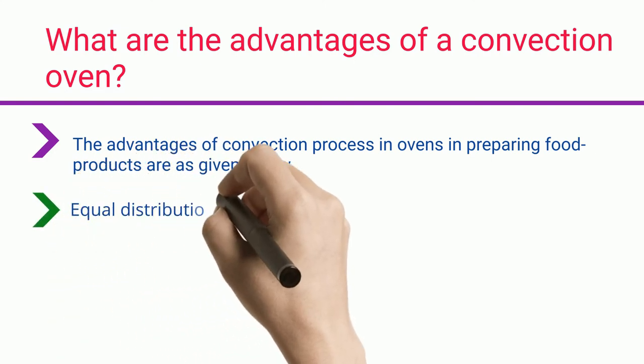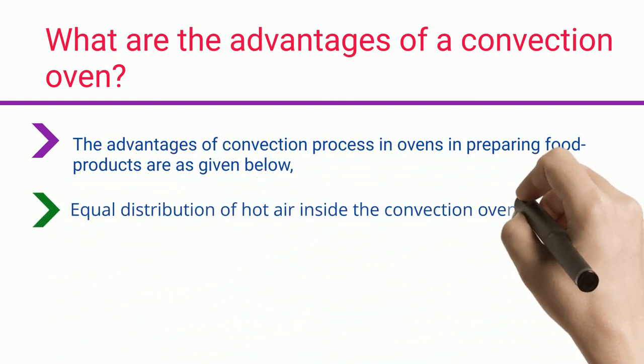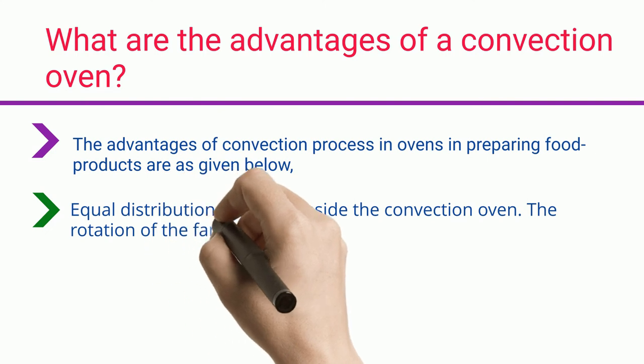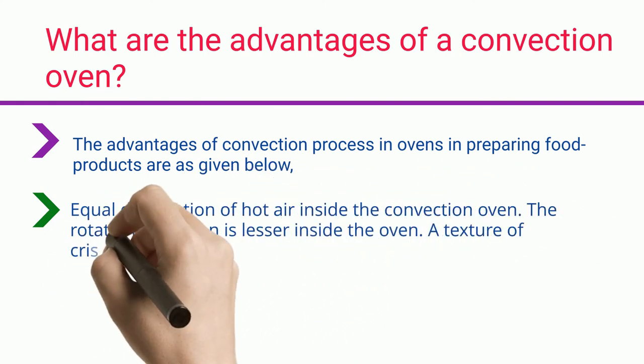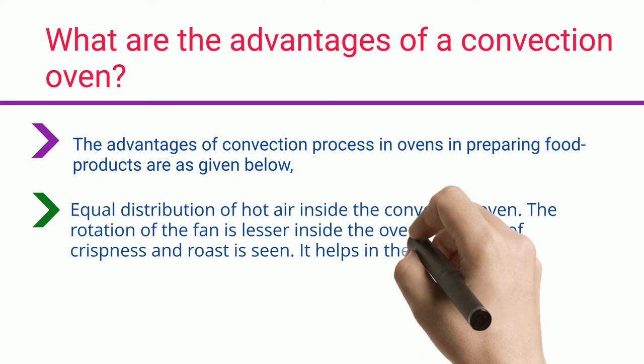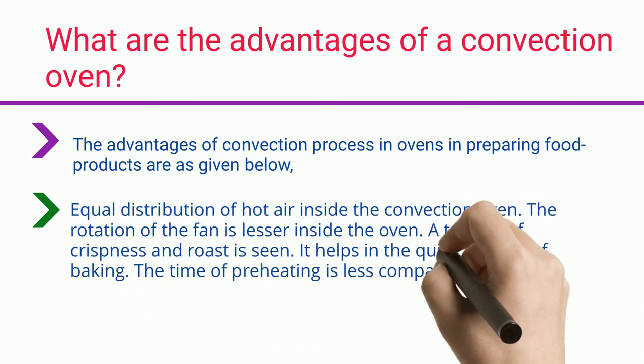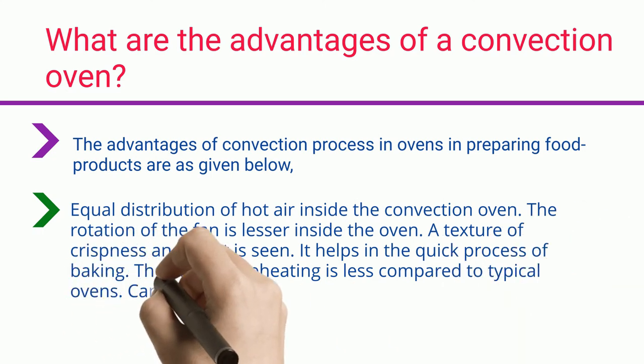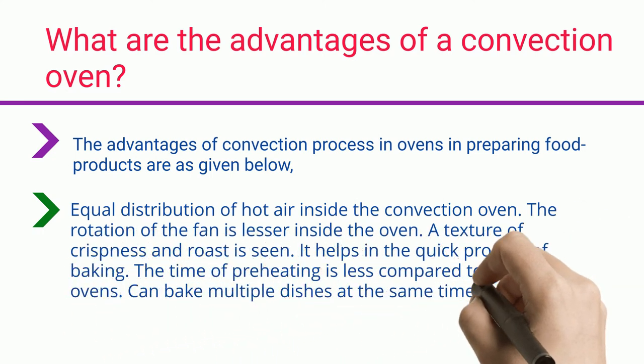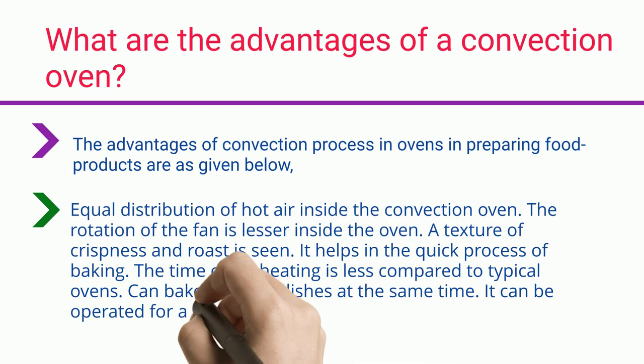Equal distribution of hot air inside the convection oven. The rotation of the fan is lesser inside the oven. A texture of crispness and roast is seen. It helps in the quick process of baking. The time of preheating is less compared to typical ovens. Can bake multiple dishes at the same time. It can be operated for a long time.